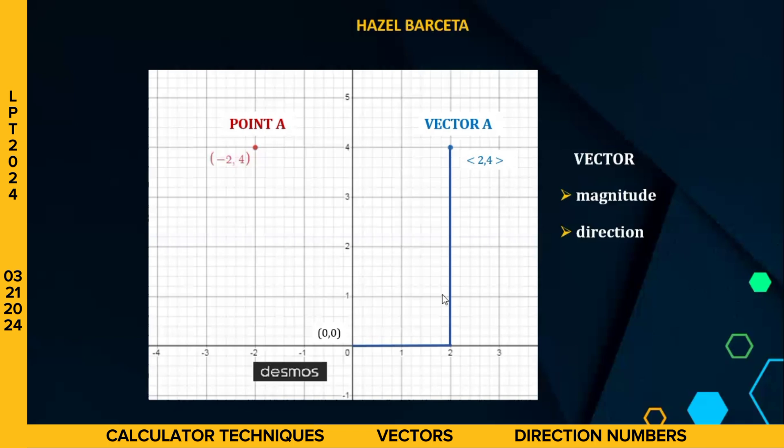So ano po yung connect nito sa ating vector? Connecting the initial point and the terminal point, we will now have like this one in magenta. And yung ating dulo po dito, connecting the terminal point is in arrow, arrowhead. Ibig sabihin, continuous po yan doon. And the length of this magenta is the magnitude of vector A. How about the direction? We have this angle theta with respect to the x-axis. So this is the direction angle with respect to the x-axis. We also have the direction angle with respect to y and the direction angle with respect to z-axis.